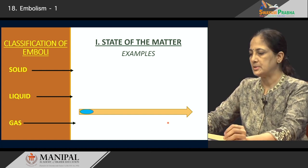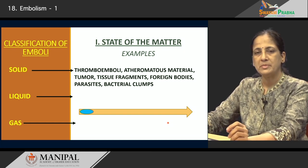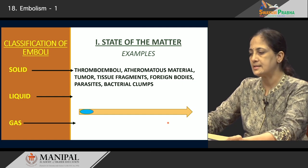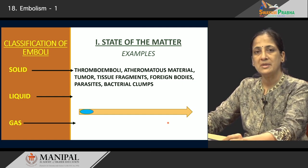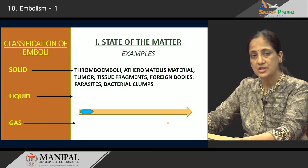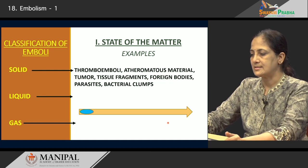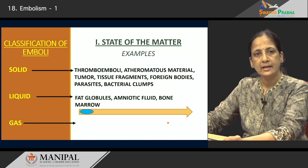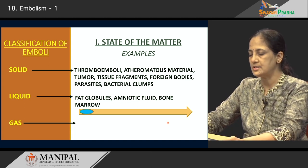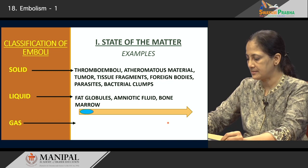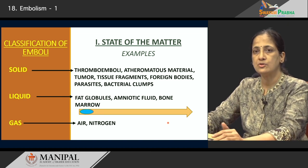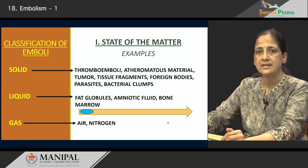Solid materials include pieces of thrombi present in the circulation that break away and are pushed distally. It can be material from within atherosclerotic plaques — the atheromatous material. It can be bits of tumor, tissue fragments, foreign bodies, parasites, and even bacterial clumps. Liquid emboli are usually fat globules, amniotic fluid from a pregnant uterus, and bone marrow fragments from a fracture site. Gases can be air — which can be injected into a vessel or enter a severed vessel — and nitrogen gas, as seen in deep sea divers.